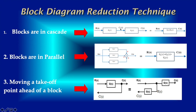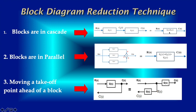From this block diagram, the output C1(s) equals G1(s) into R(s). Similarly, for the next block, C(s) equals G2(s) into C1(s). From these two equations, with R(s) as input and C(s) as output, we get C(s) equal to R(s) into G1(s) into G2(s). That means if two blocks are in cascade, the total transfer function is G1(s) into G2(s).